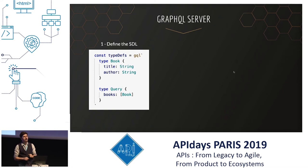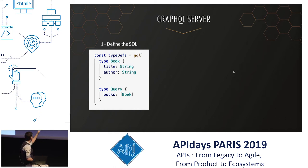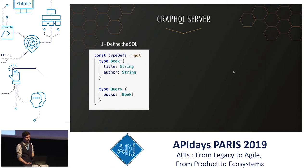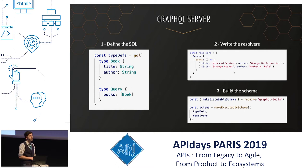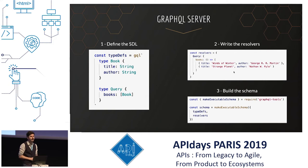Before I talk about Nexus, here is how we traditionally create a GraphQL server. First, we define the SDL — a book with a title and author, and also the query where we have books which returns an array of book. Then we write the resolvers. Here is the resolver for books. And then we build the schema by merging the SDL and the resolvers. We put it to Apollo Server or the like, and there we have it. This is called the SDL-first approach.